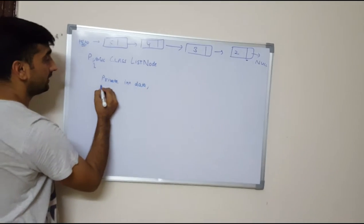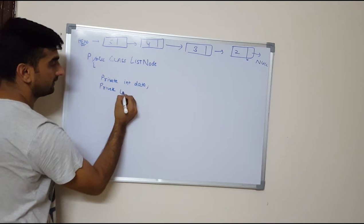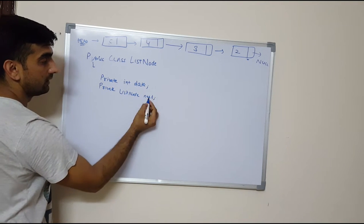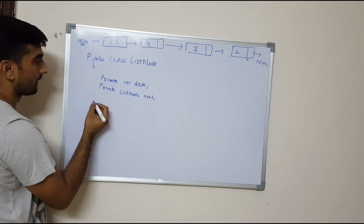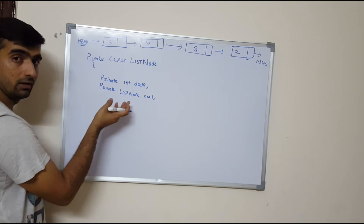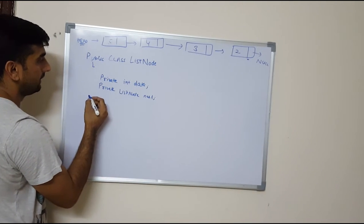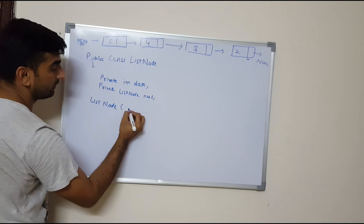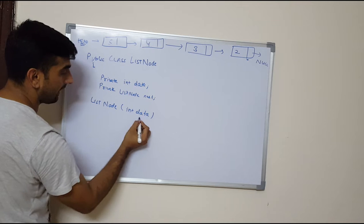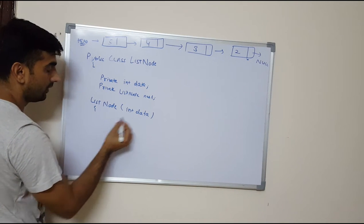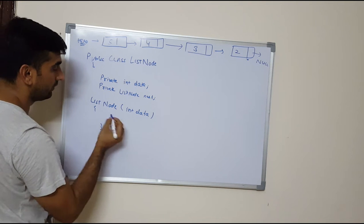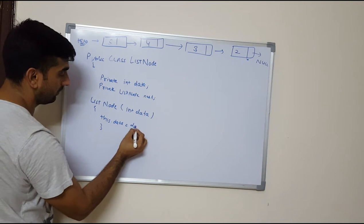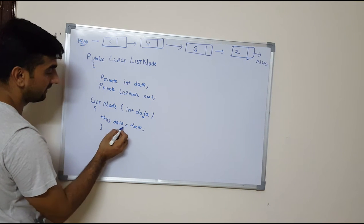The other variable I am taking is of ListNode type, which will give me the next node of a particular node — typically the next node of the current node. Now this is my class. This is my constructor which will take an int data value. When you create an object of this class you just pass the value and it will set that value into the current node: this.data equals data.